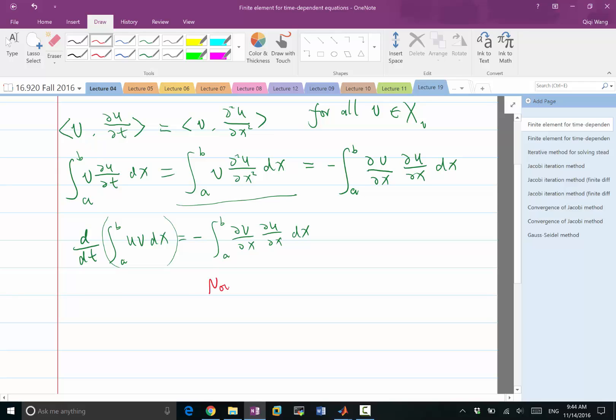Now restrict u to be a summation of i goes from 1 to n of ui, which is now a number instead of a function, times phi_i, which are the basis functions of the finite-dimensional subspace. Here, we can use the piecewise linear and continuous space, as we did before in Poisson's equation.